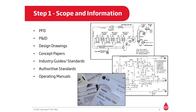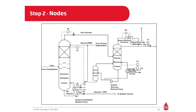What are the process conditions of the systems? Are there sufficient details in the process drawings? Do we have the right reference materials such as operating manuals, codes and standards, and design documentation? In step number two, we now break down our plan into more manageable sections, otherwise known as nodes.